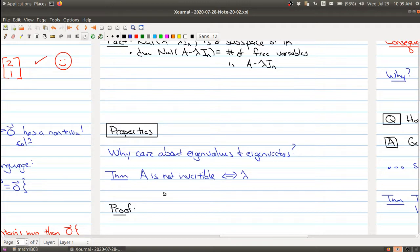One of the first things that's kind of useful is that it can actually determine whether your matrix is invertible or not. So the following theorem is saying that A is not an invertible matrix if and only if lambda equals zero is an eigenvalue. So if you find that zero is an eigenvalue of your matrix, your matrix A cannot be invertible.